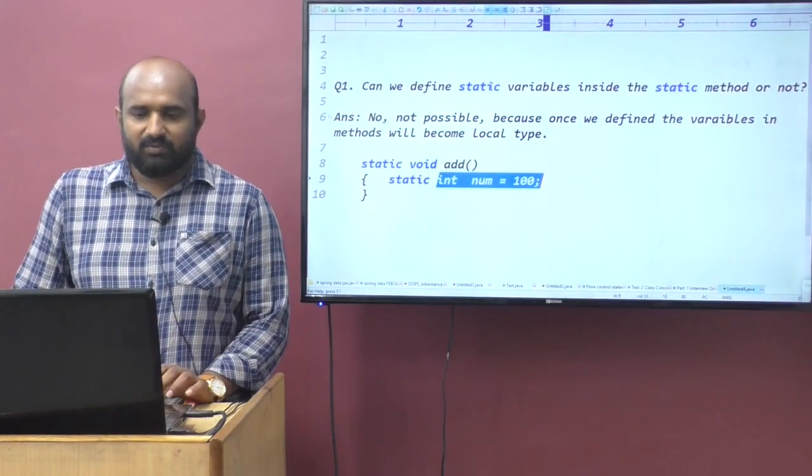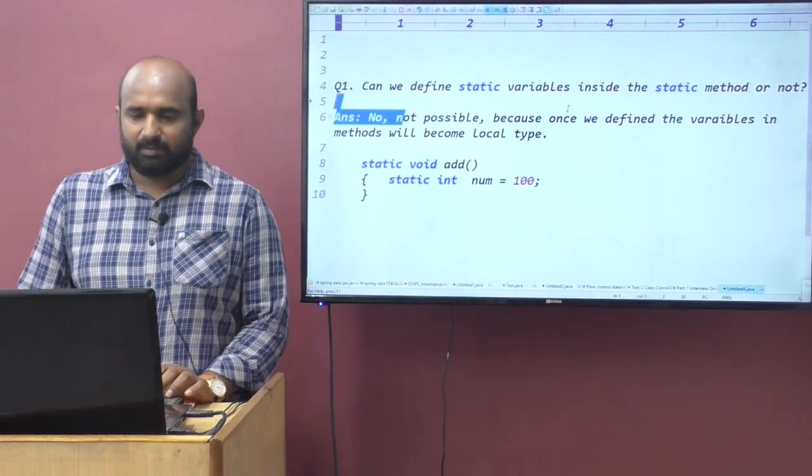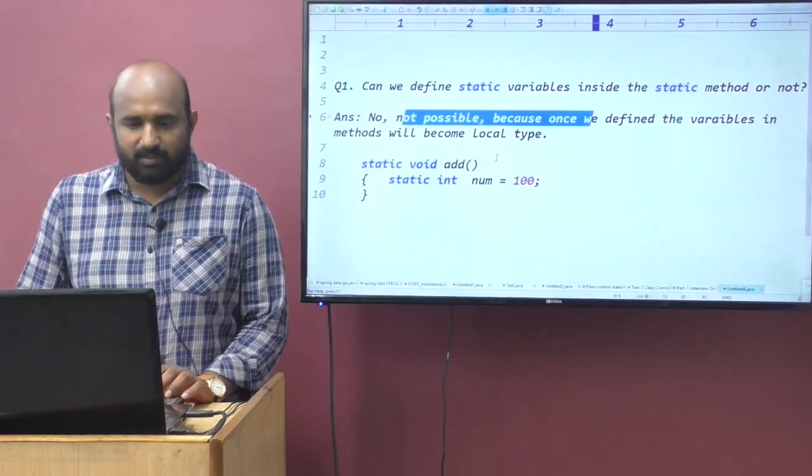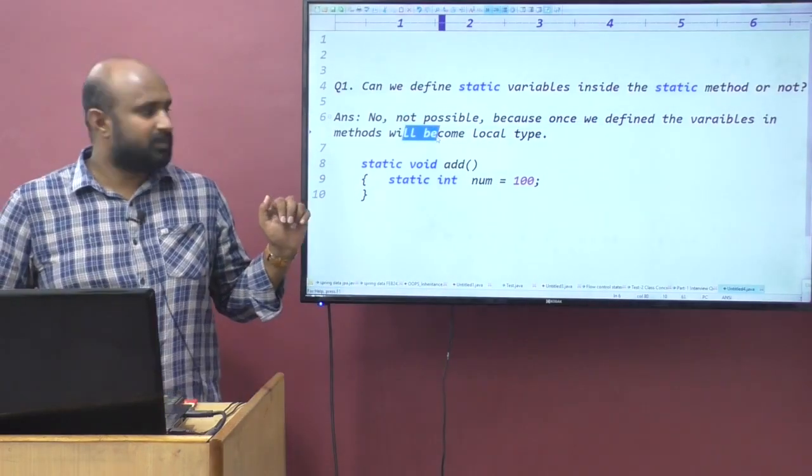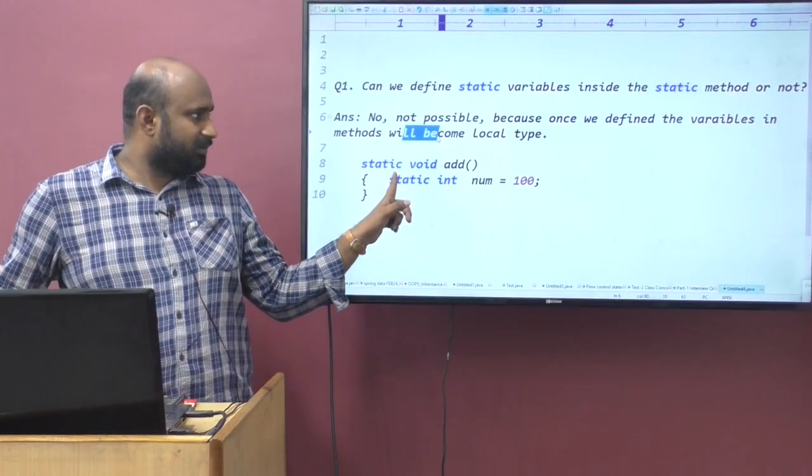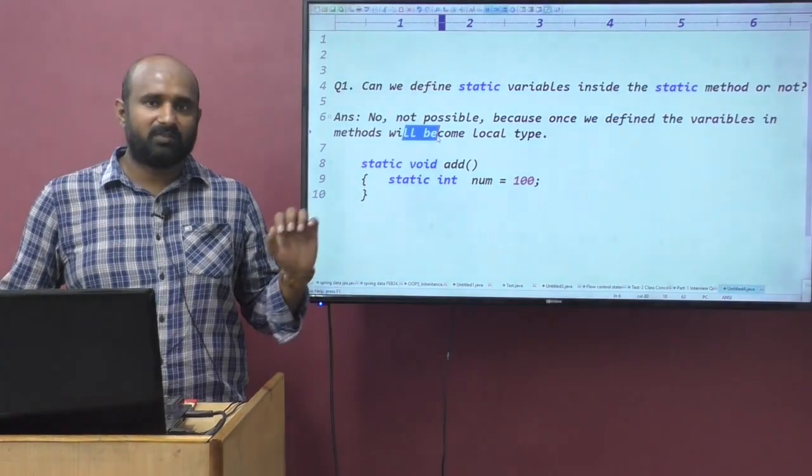Can we define static variables inside the static method or not? No, not possible. Because once we define the variable inside the method, it will become local type. Inside the static method we can't define the static variable. Even inside the instance method, you can't define the instance variable.